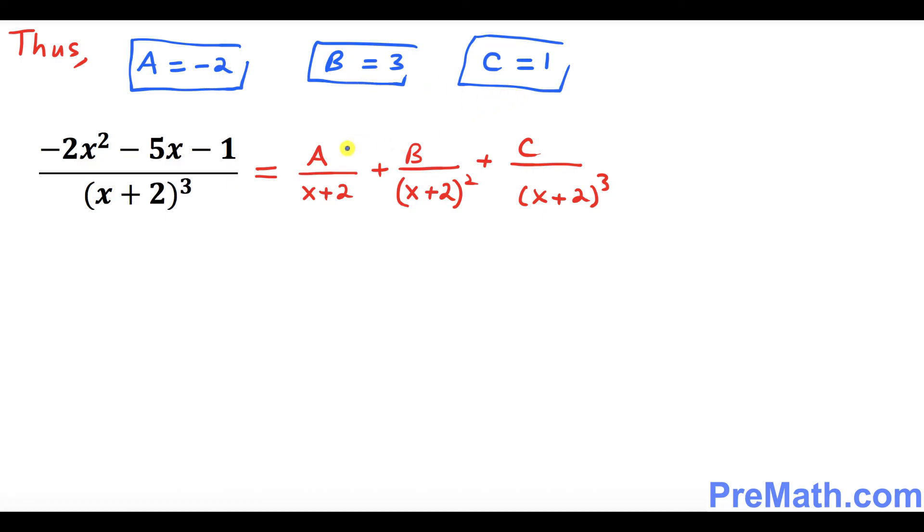And we're going to plug it in. We're going to replace A over here by negative 2, we're going to replace B by 3 and C by 1. So our complete answer is going to be negative 2 over x plus 2, plus 3 over x plus 2 squared, and finally plus 1 over x plus 2 power 3. And that is our complete answer. Thanks for watching and please subscribe to my channel for more exciting videos.